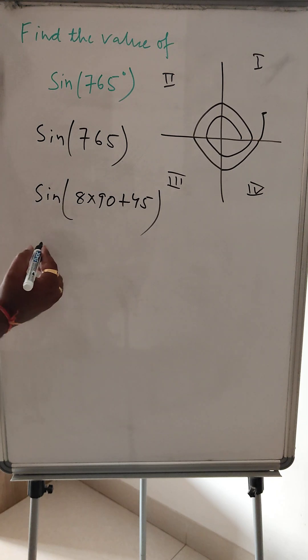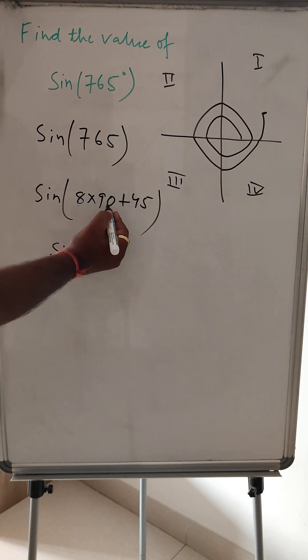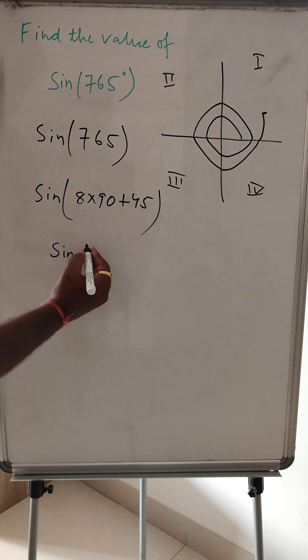In the first quadrant, all are positive. So sin, it will be positive value. And it is even multiple of 90. So sin will remain the same, it will not change.